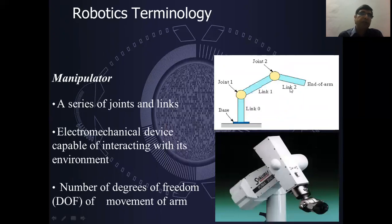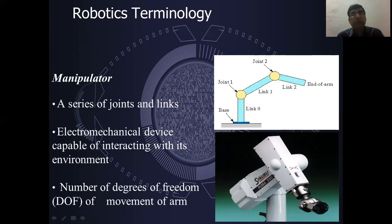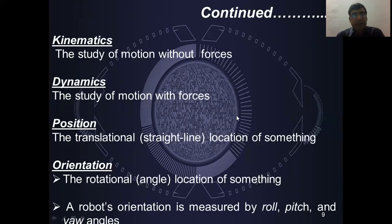The next term is Manipulator. A manipulator has a series of joints and links, and is an electro-mechanical device which helps to interact with the environment. The manipulator has a degree of freedom. The movement of the arm determines its degree of freedom. Study of motion without forces is called kinematics; study of motion with forces is called dynamics.